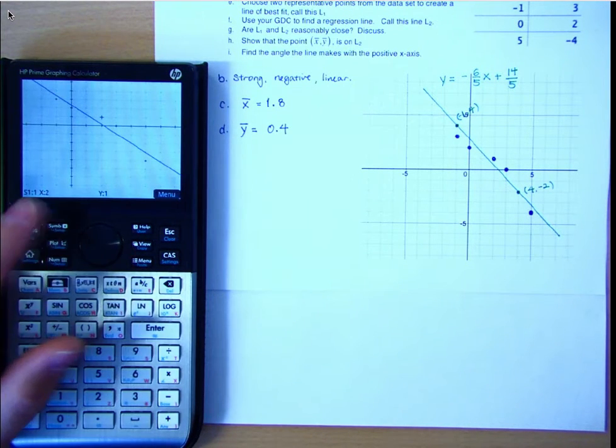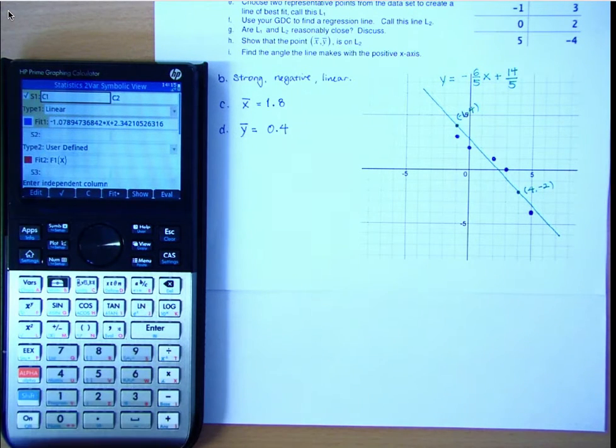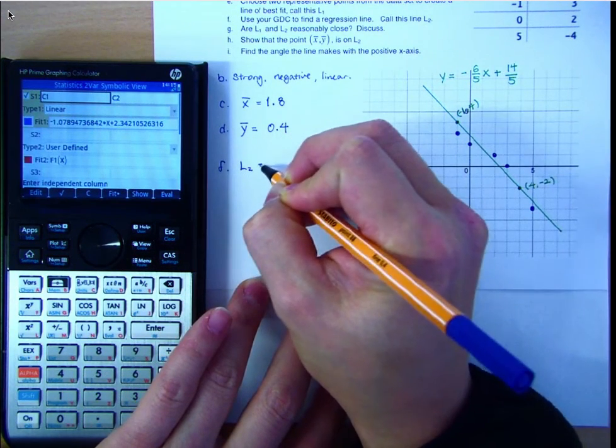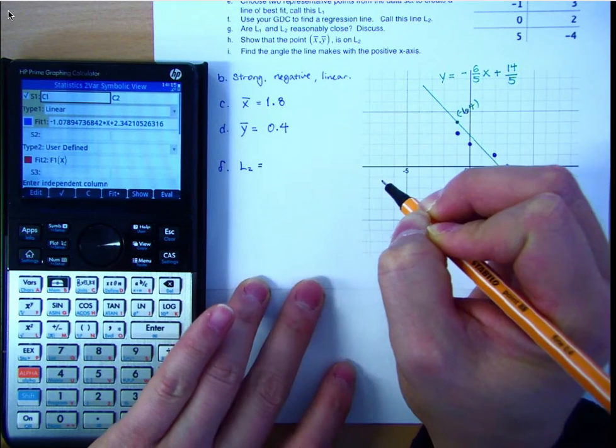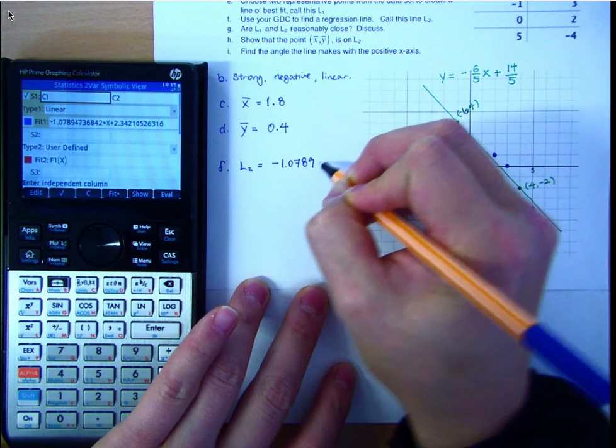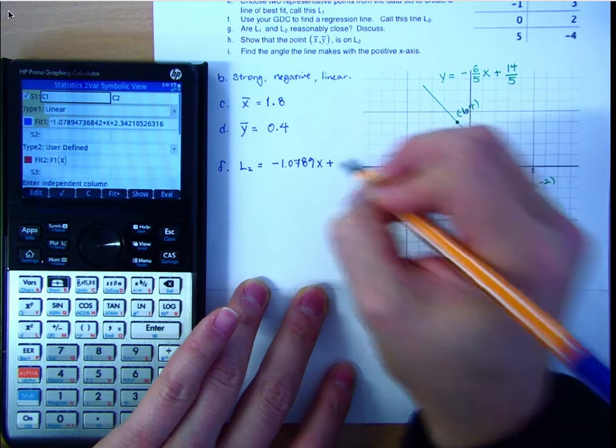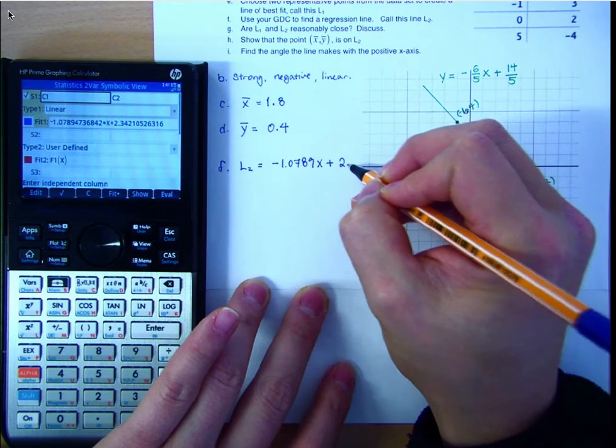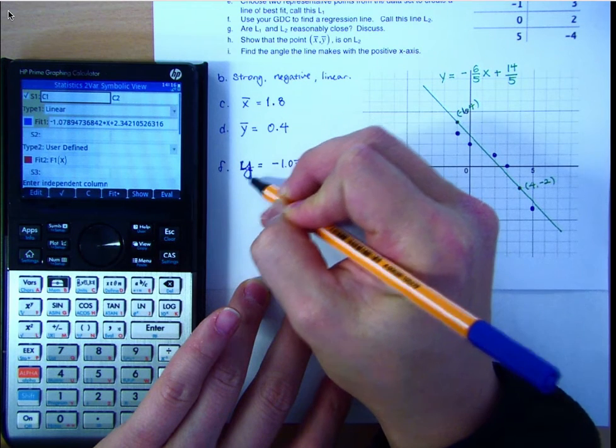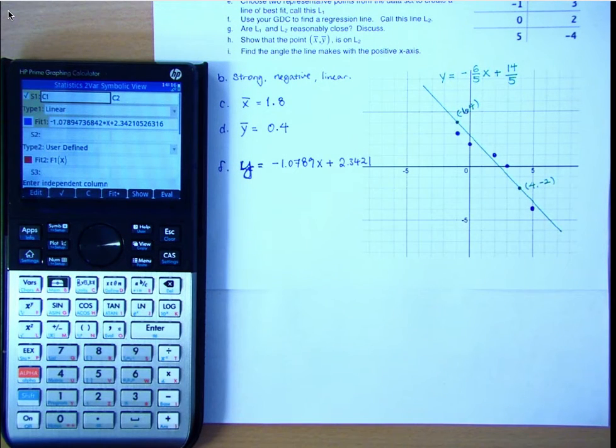And I press plot. And therefore, you see fit 1, it gave us y equals negative 1.0789x plus 2.342. And you can see pretty close to what we generated on our own, but this is the regression line.